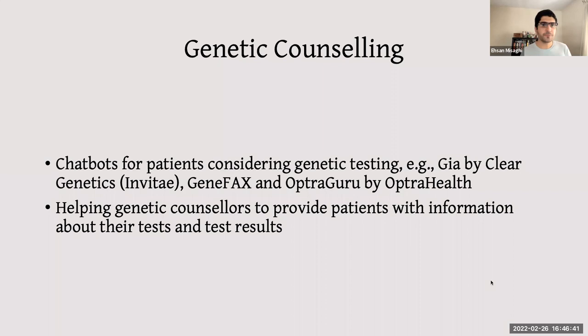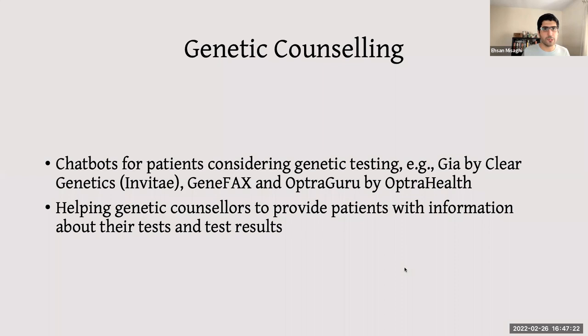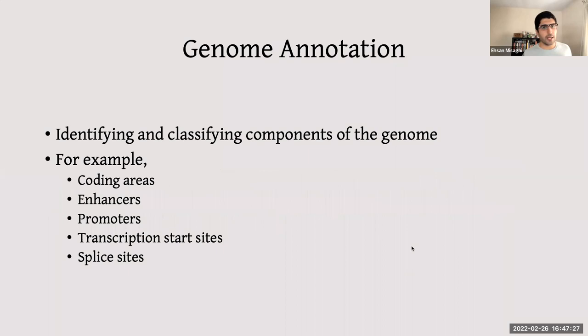Genetic counseling is an important part of managing genetic disorders. Chatbots are now available for patients considering genetic testing. Examples include GIA (Genetic Information Assistant) by Clear Genetics / Invitae, Gene Facts, and Optra Guru by Optra Health. These chatbots help genetic counselors provide patients with information about what tests they'll undergo, what the results mean, and how to interpret them.